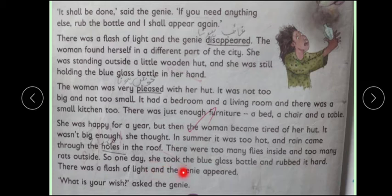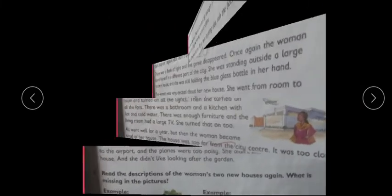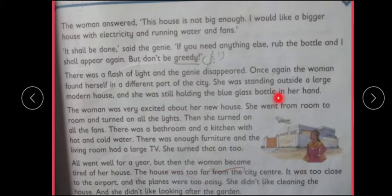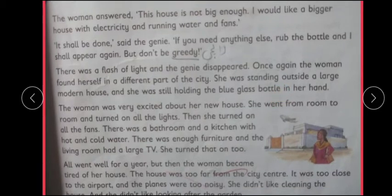So one day she took the blue glass bottle and rubbed it hard. There was a flash of light and a genie appeared again. What is your wish? asked the genie. The woman answered: this house is not big enough. I would like a bigger house with electricity and running water and a fence. It shall be done, said the genie. If you need anything else rub the bottle and I will appear again. But don't be greedy. There was a flash of light and the genie disappeared.